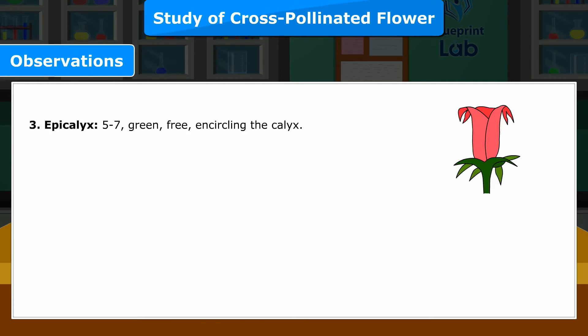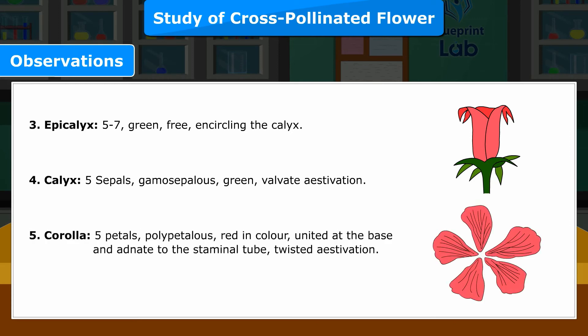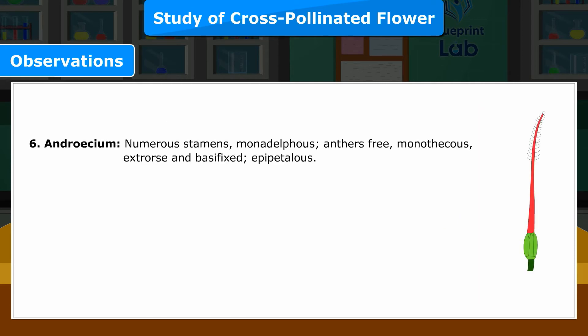4. Calyx — 5 sepals, gamosepalous, green, valvate aestivation. 5. Corolla — 5 petals, polypetalous, red in color, united at the base and adnate to the staminal tube, twisted aestivation.